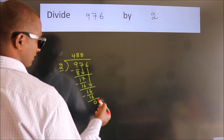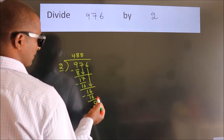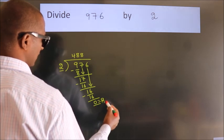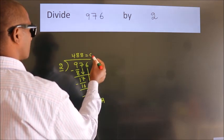After this, no more numbers to bring down. So we stop here. This is our remainder. This is our quotient.